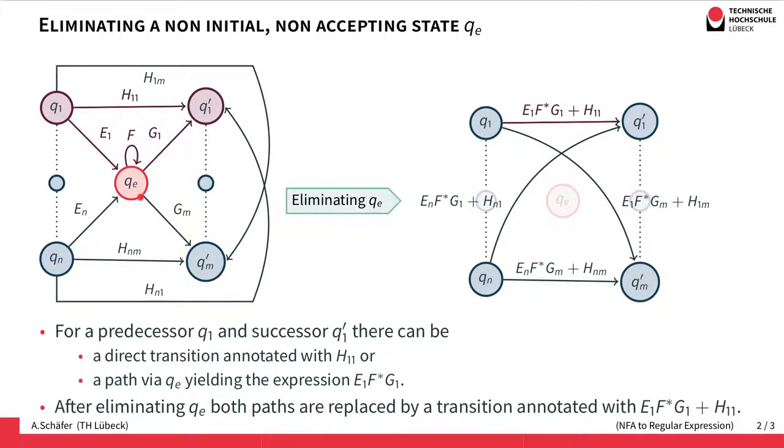Therefore, when eliminating QE, we have to add a transition covering both possibilities, both paths. We add a direct transition from Q1 to Q1'.